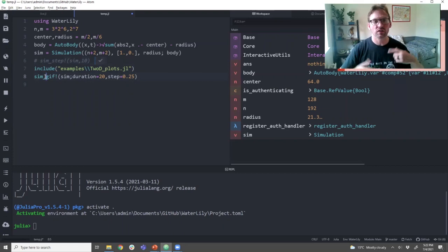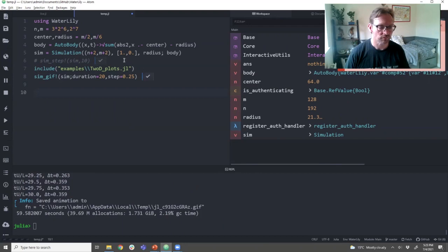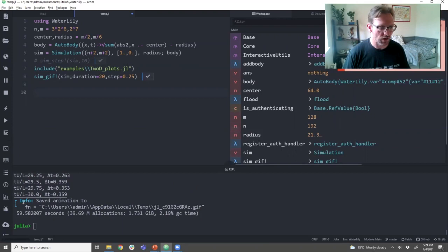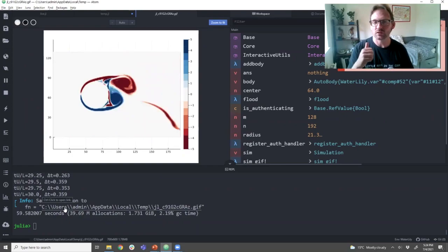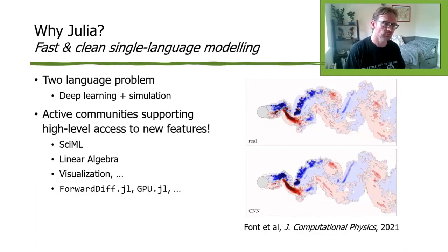However, it'll be a little bit easier to show you what happened if I use this simgif function. So in this case, it integrates, but it also generates images and puts them together into a gif. So it'll take a little bit longer, but it'll be prettier. So the simulation gif function integrated from a time of 10 and did 20 more. So now it's at time 30. And it's made us a gif. And we can see that that's a nice oscillating flow. The default visualization here is the vorticity. So it's like the rotation.